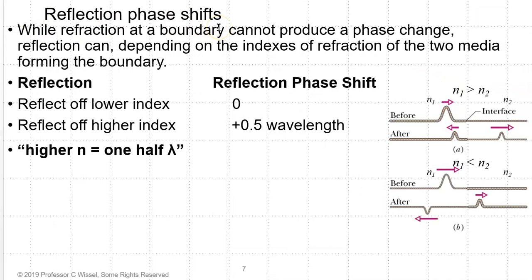Refraction at a boundary cannot produce a phase change — reflection can. It depends on the index of refraction of the two media forming the boundary. If you are reflecting off a lower index, there's no phase shift. If you're reflecting off a higher index, there's a one-half wavelength phase shift difference. The way to remember that is: higher n equals one-half lambda.